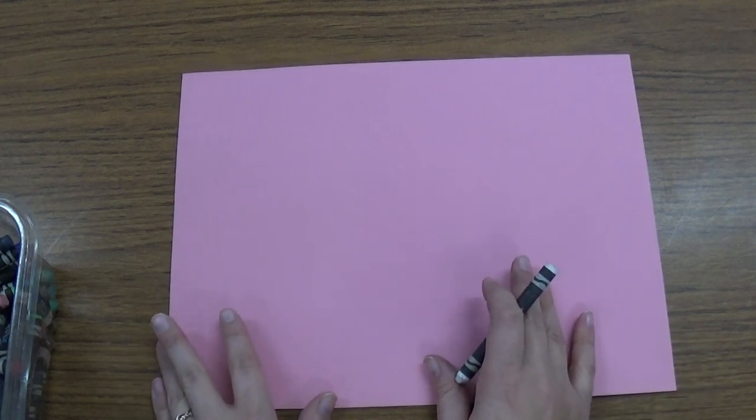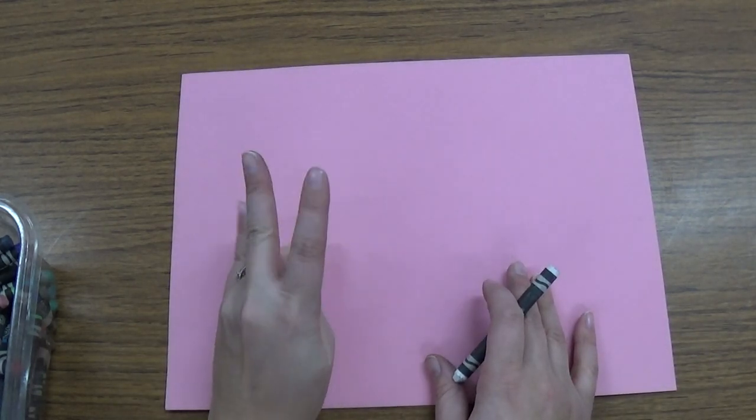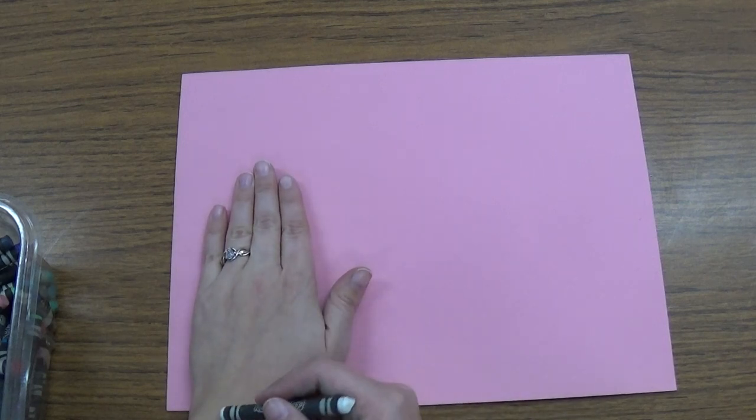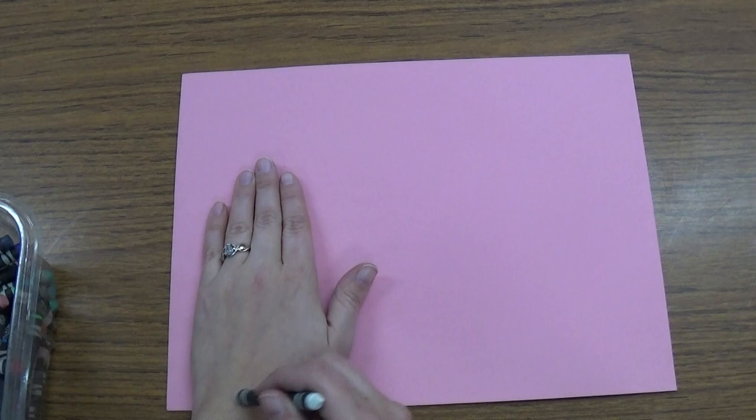So I'm going to start by tracing around my hand to make a mitten that's the right size for my hand. So I'm going to put my hand on the paper and I'm going to make sure that just my hand is on my paper. I'm not going to have my arm on the paper at all, just my hand.